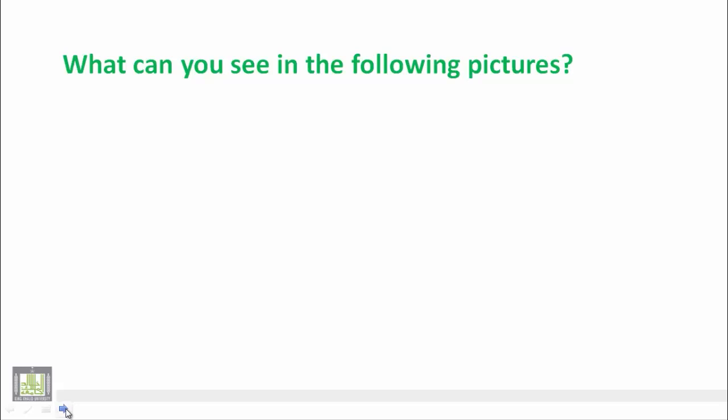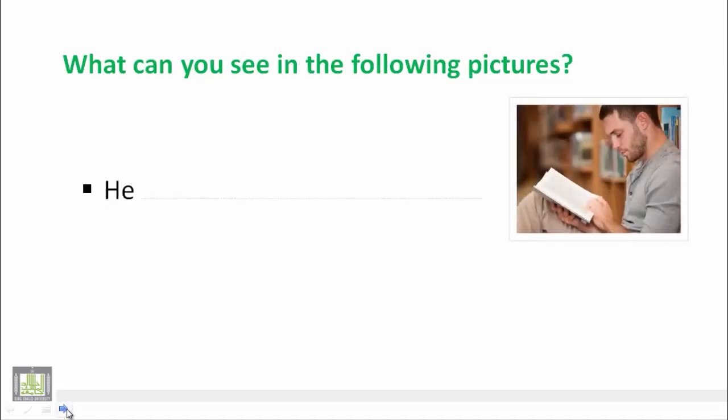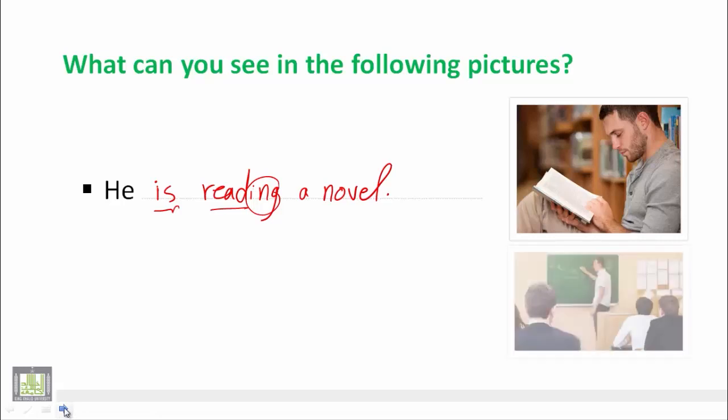We will describe the pictures in front of us using this tense. سنصف الآن الصور التي أمامنا باستخدام هذا الزمن. Number one, what can you see in the picture? Of course, he is a man. Because we have he, then we have to use is. He is reading a novel. So we have is because we have he, and we have the verb read plus ing.